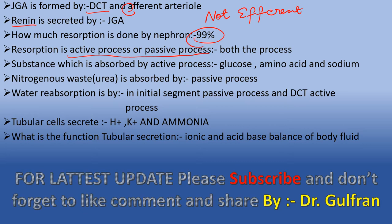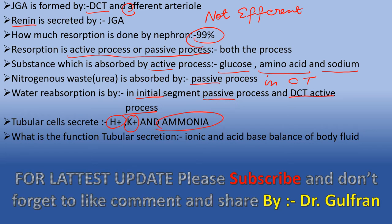Substances absorbed by active processes are those essential for the body: glucose, amino acids, and sodium. Nitrogenous waste, that is urea, is absorbed by passive process. In the collecting tubule, water reabsorption in the initial segment is a passive process, and in the distal convoluted tubule it is an active process. Tubular cells secrete hydrogen ions, potassium ions, and ammonium.